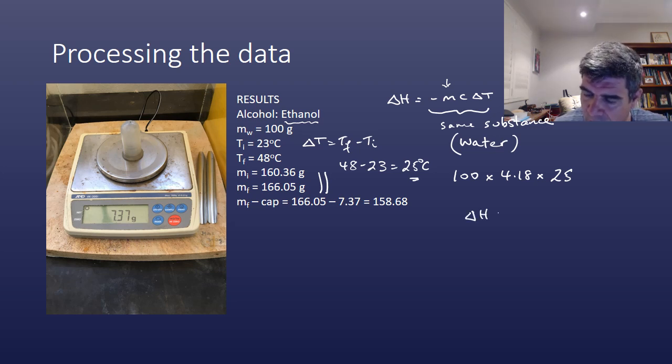So therefore, if we look at the delta H value from our experiment, we have minus 100 multiplied by 4.18 multiplied by 25. And this gives us a value of 10,450 joules. So that's the amount of energy that's actually been transferred into that water to raise its temperature.